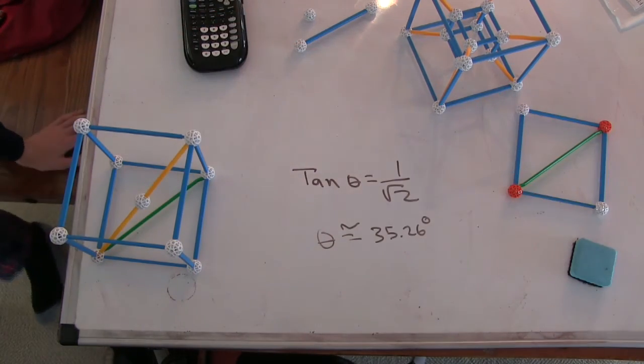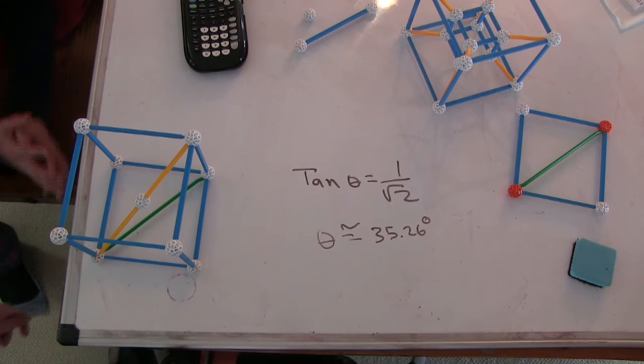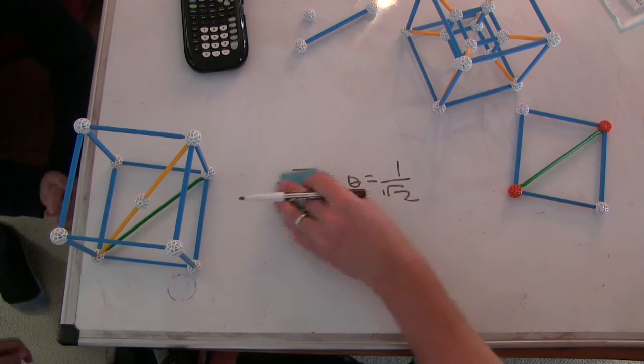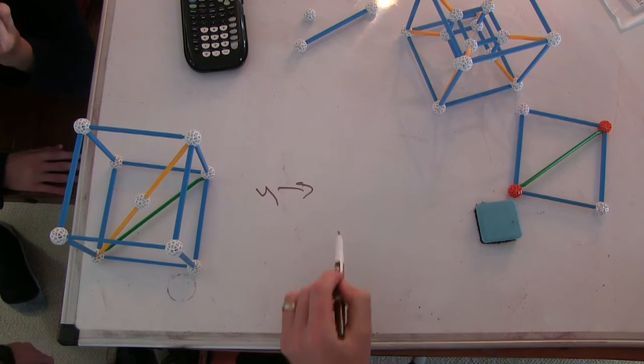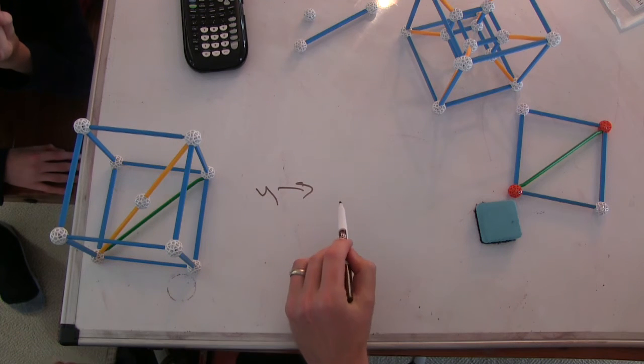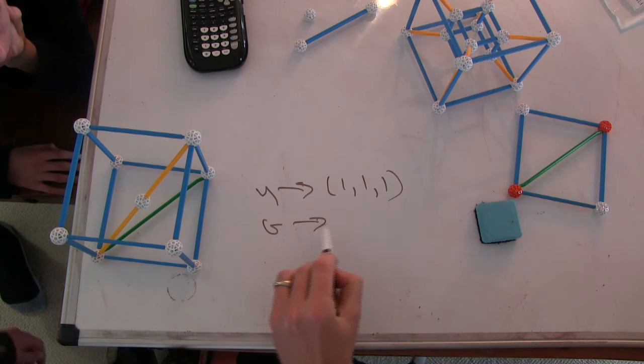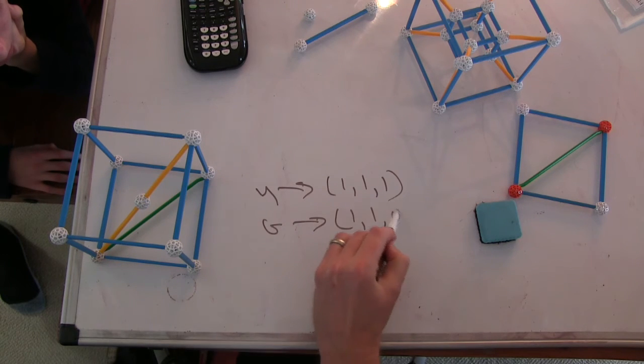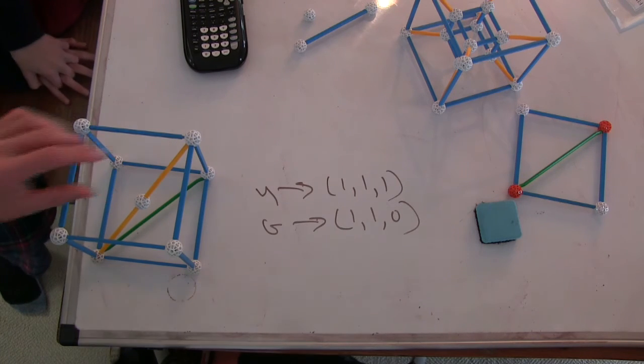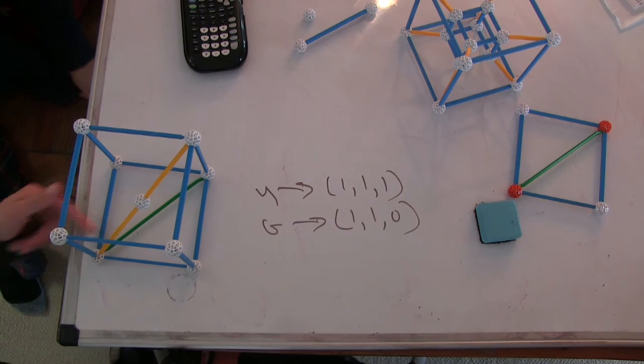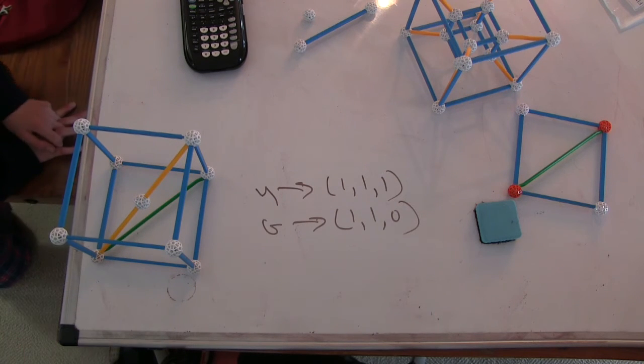You could use the dot product here. Okay. What are my two vectors? So that's the green line and the yellow line. And yellow is what vector? One, one, one. And then the green is? One, one, zero. So the dot product of the two vectors would be their respective magnitudes times cosine of the angle between them. So magnitude A and magnitude B times cosine of the angle between them.